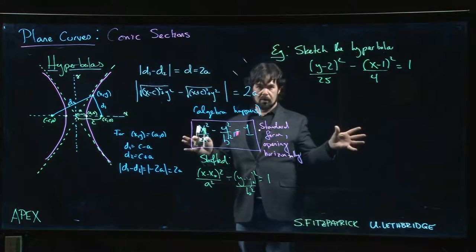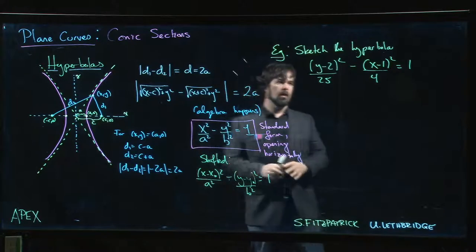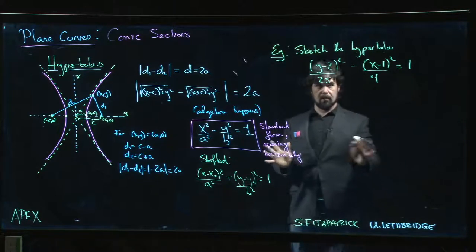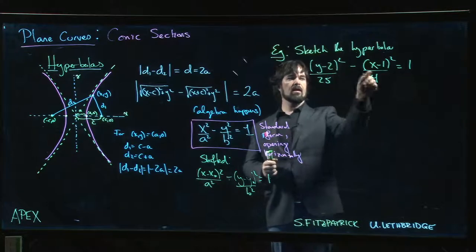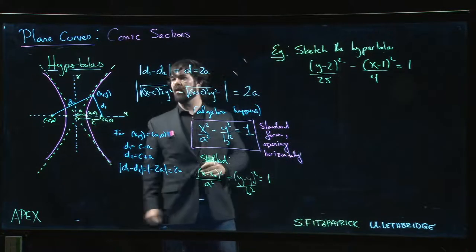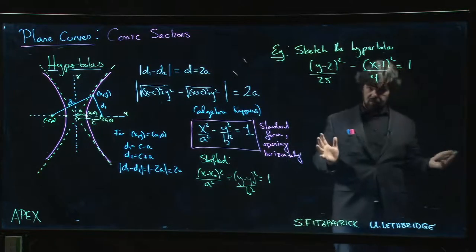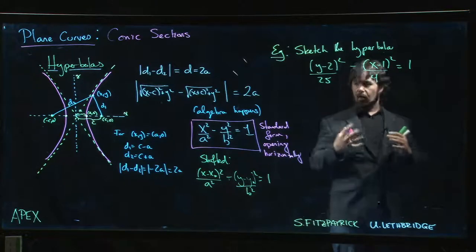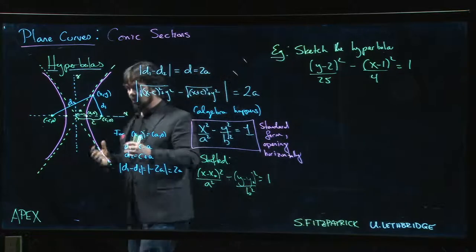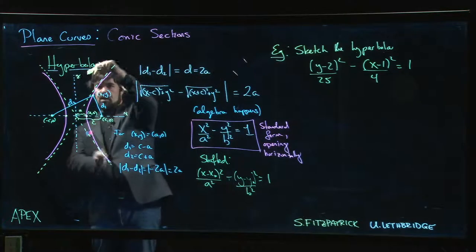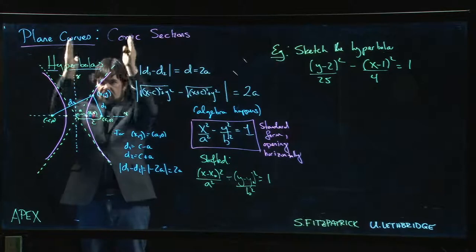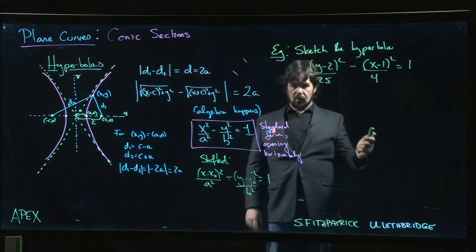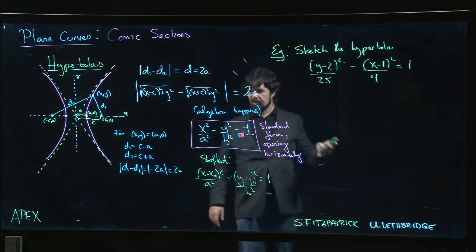We're going to do an example where we want to sketch a hyperbola. This one is going to be opening vertically because we have a plus sign on the y and a minus sign on the x. It's also shifted right, so the center — the intersection of our two axes of symmetry — is at the point (1, 2). We also need to figure out how the 25 and the 4 inform the shape and steepness of the graph.